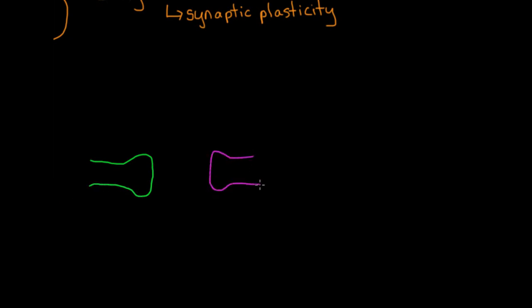Neurons communicate using electrochemical signals. That means a combination of electricity and chemicals. When neurons communicate, they actually don't connect to each other directly. There's a junction in between called the synapse.